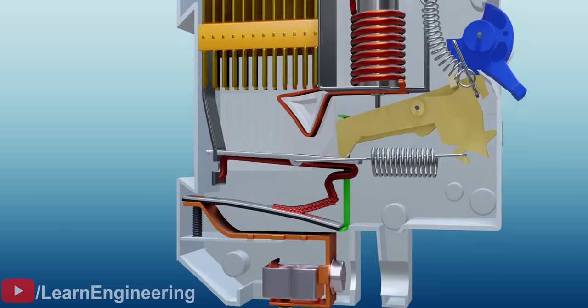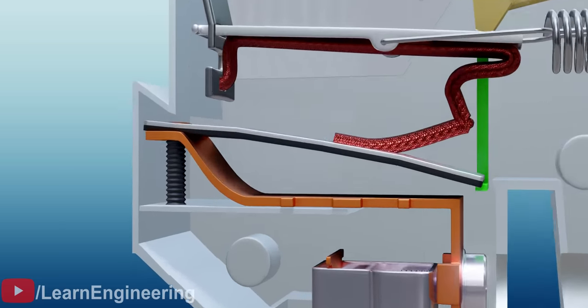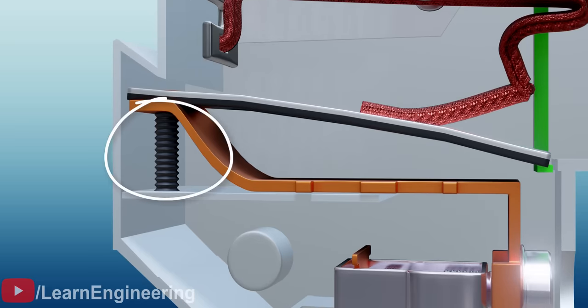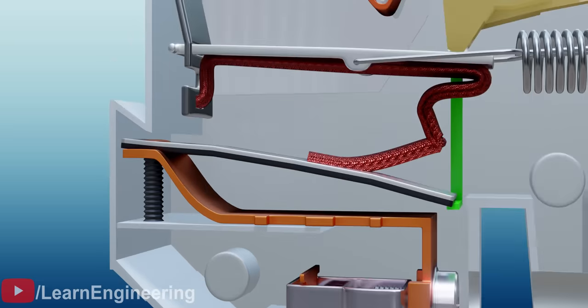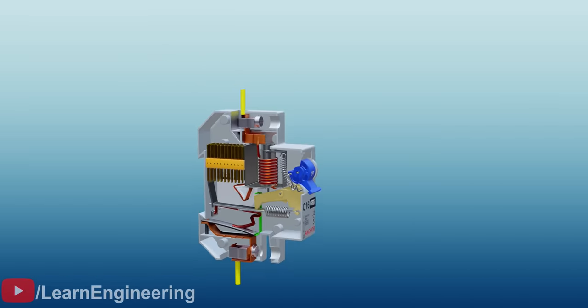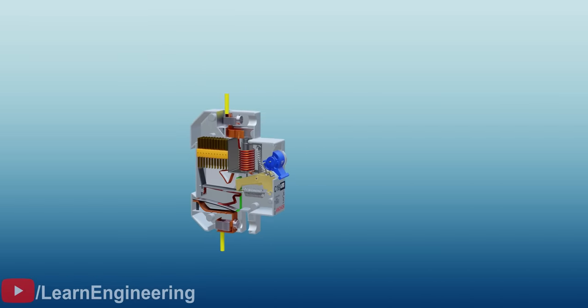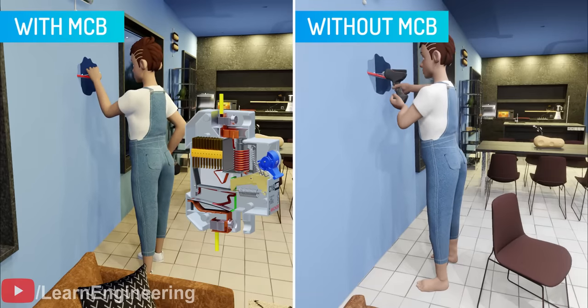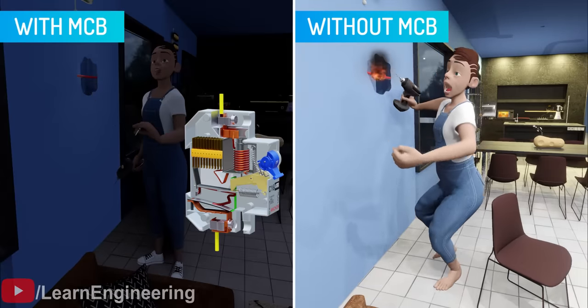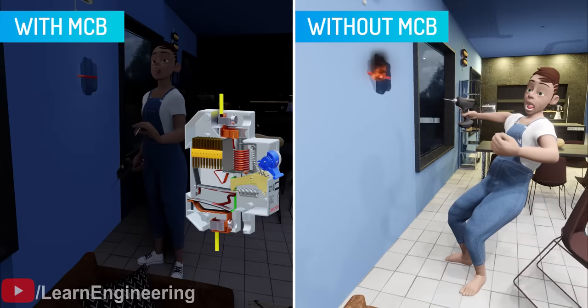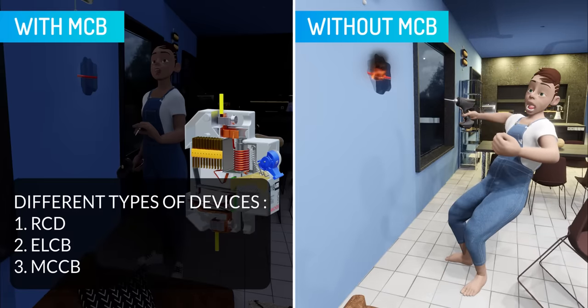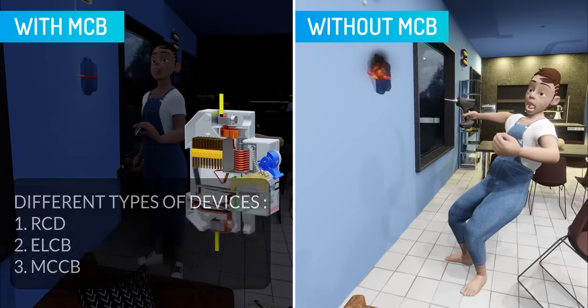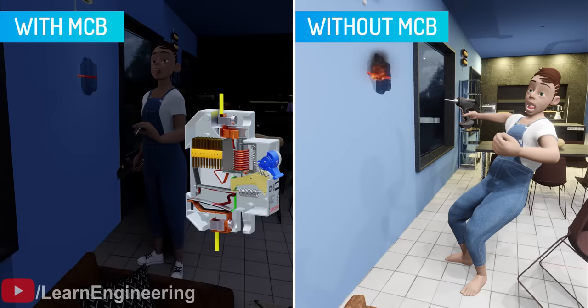The current value at which the bimetallic strip should operate can be varied with this screw, which is only adjusted by manufacturers. We hope you have now developed a good understanding of a miniature breaker. With this precisely designed device, you are safe from electrical disasters. Apart from MCB, we have other breaker types designed for different types of faults: RCD, ELCB, and MCCB. Don't forget to support us. Thank you.